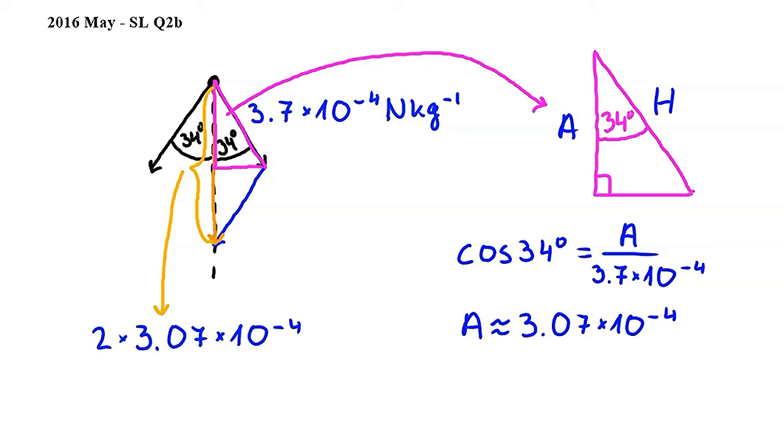Carrying out this calculation and rounding, we get approximately 6.1 times 10 to the power of negative 4 newtons per kilogram. This is the resultant gravitational field strength.